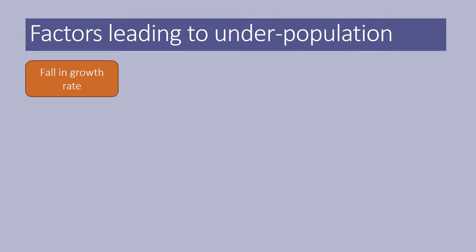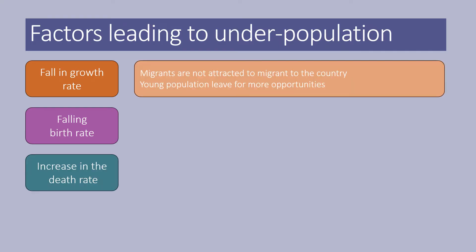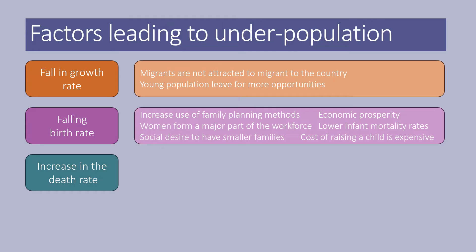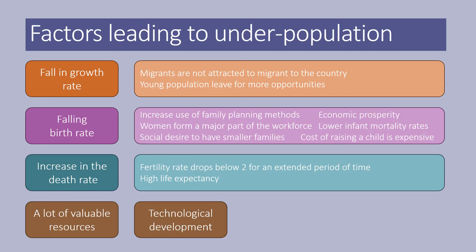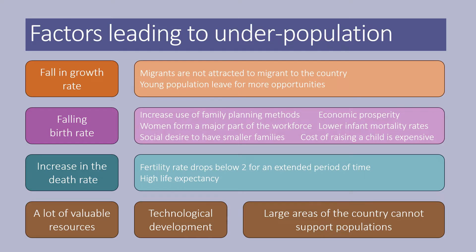Factors that lead to underpopulation include a fall in growth rates due to a falling birth rate and increasing death rates. Migrants are not attracted to the country, and young populations leave for more opportunities. A falling birth rate can be tied to increased use of family planning, economic prosperity meaning you don't need more workers, women forming a major part of the workforce delaying children, lower infant mortality rates, social desire for smaller families, and the high cost of raising a child. An increasing death rate combined with a fertility rate dropping below two for an extended period leads to population decline. Countries may also have loads of valuable resources that a small population can exploit through technology, or large areas that simply cannot support populations.